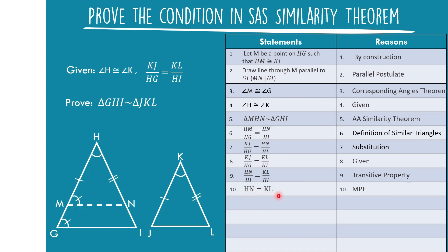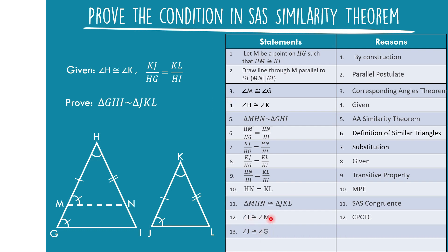Statement twelve: Angle J is congruent to angle M by CPCTC — corresponding parts of congruent triangles are congruent. Statement thirteen: Angle J is congruent to angle G, since from statement three, angle M is congruent to angle G, so by the transitive property, angle J and angle G are also congruent.